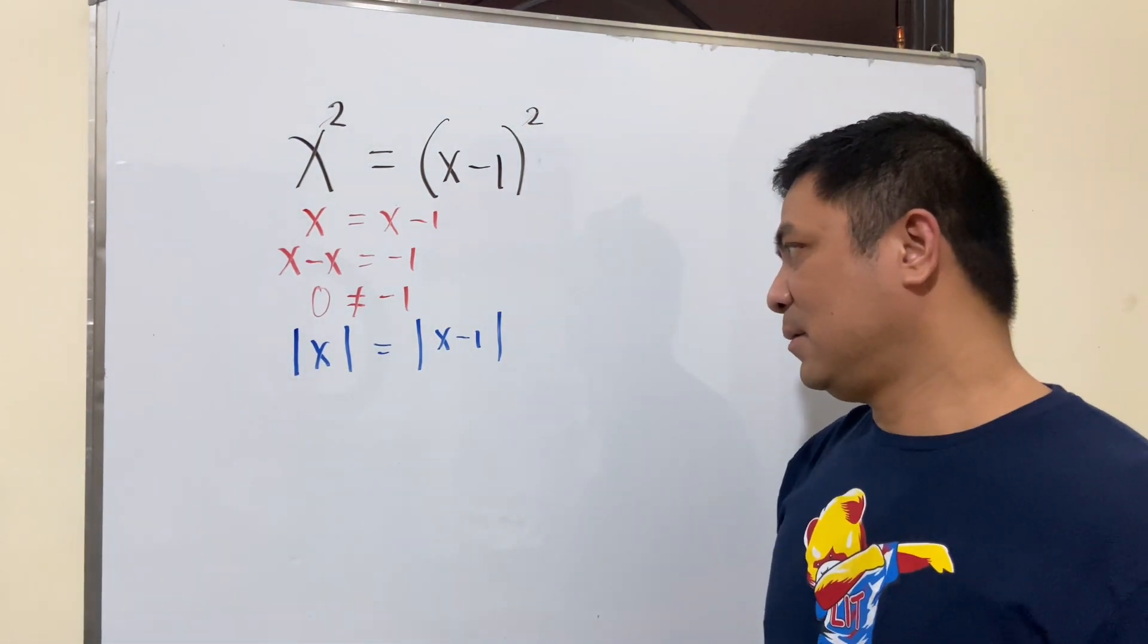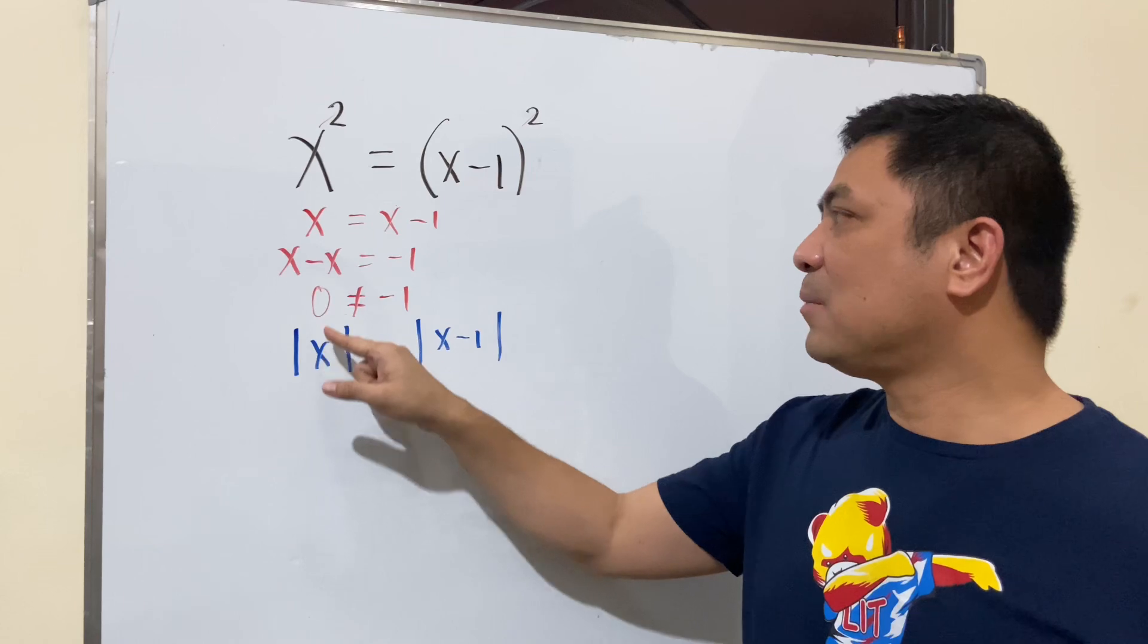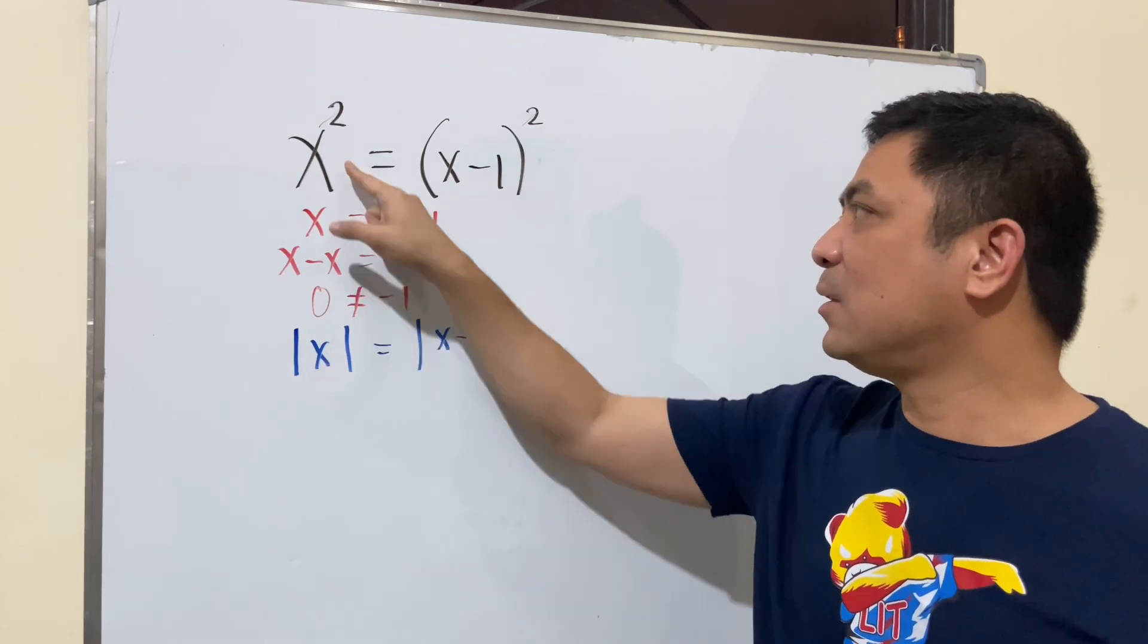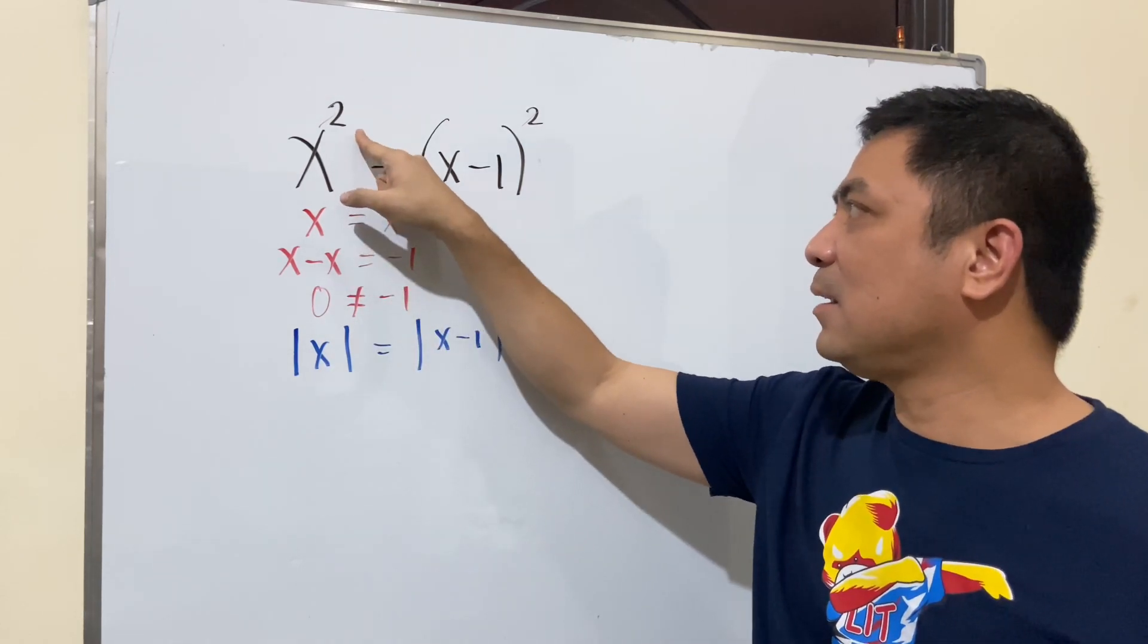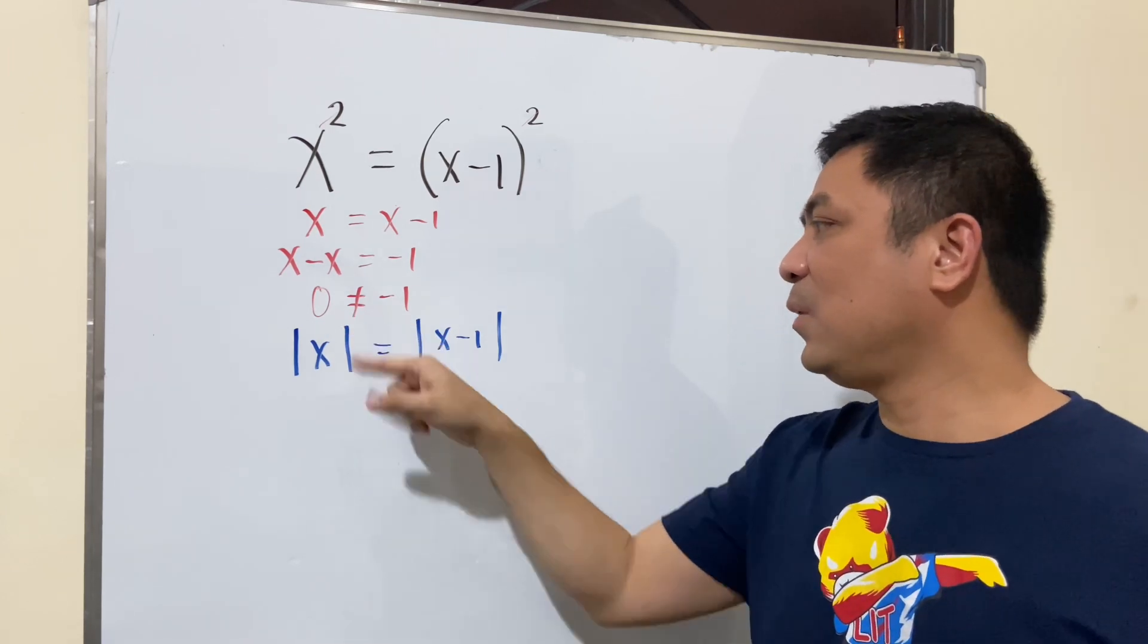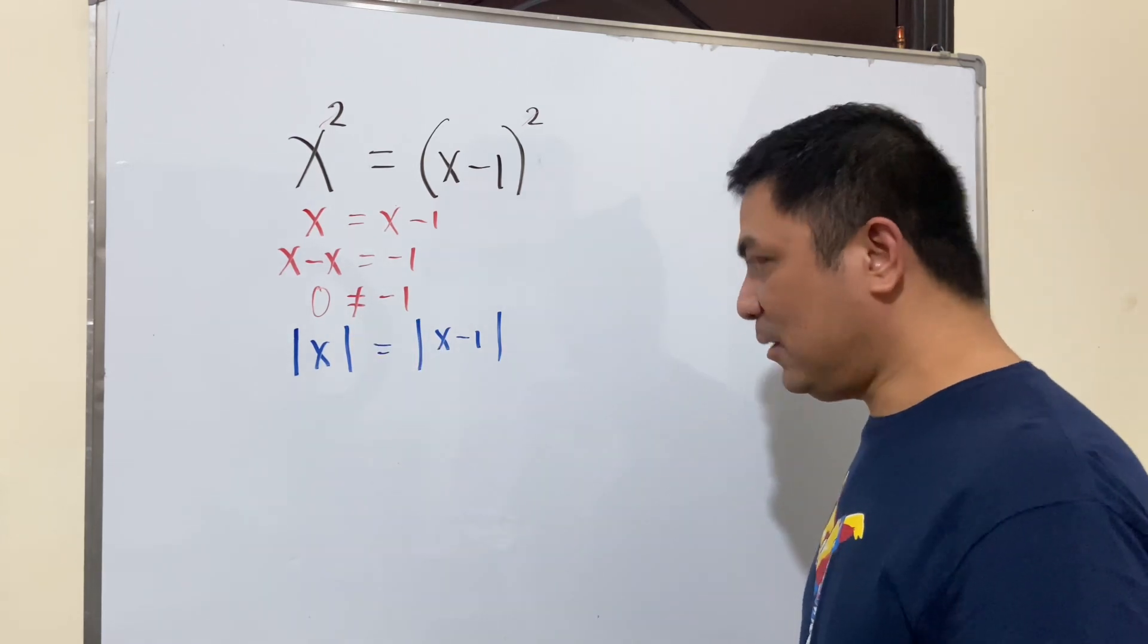Okay, so why is that so? Say for example, this is negative value, so since negative times negative would become positive. So that's why we take the absolute value.